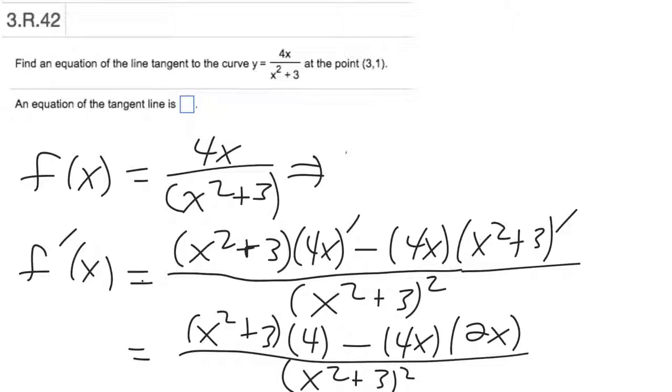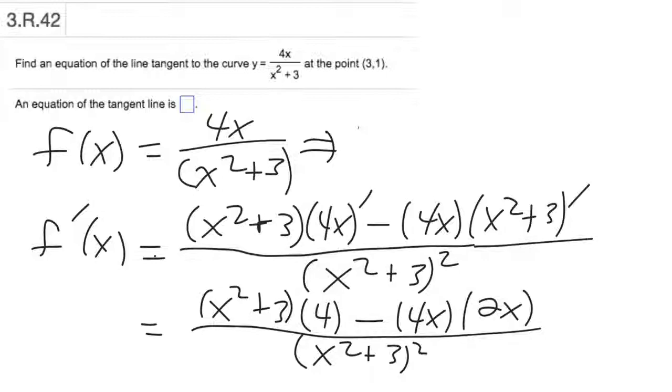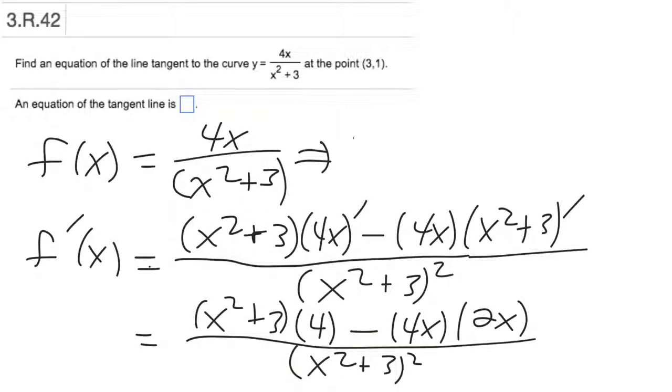So that's the derivative, and the derivative gives us the formula for the slope. But we want a particular slope at a particular point, and the point is the point 3, 1. So when x is 3 and y is 1. So to find the slope at that point, I'm just going to evaluate f prime of 3. In other words, put the x coordinate in place of x in the derivative, and that will tell you the slope of the curve at x equals 3.